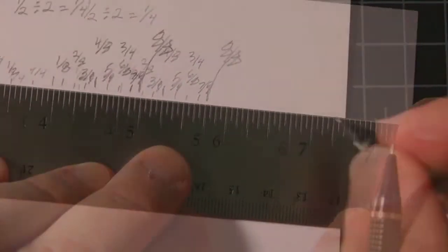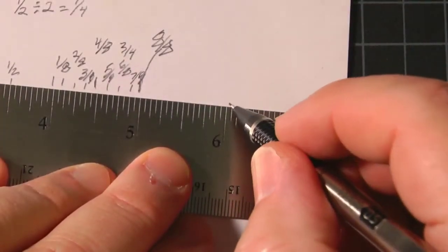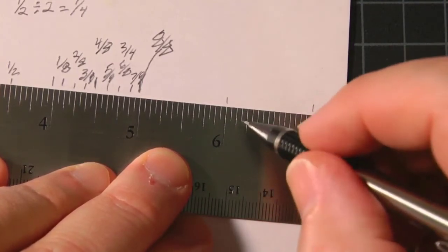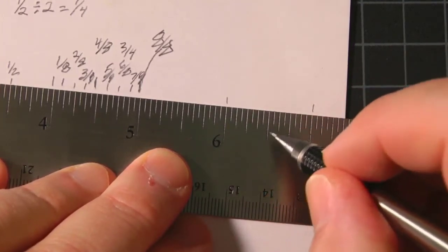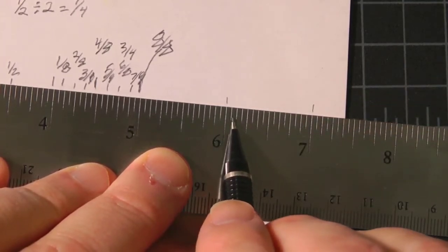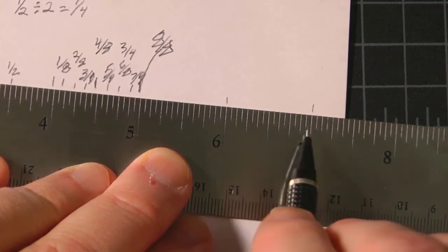So now we're going to get even more detail. Let's do it between the six and the seven. So we have the eighths. In between those are the sixteenths, because there are sixteen of the tiniest lines here between the six and the seven.